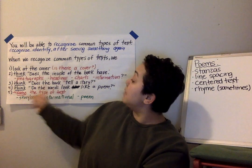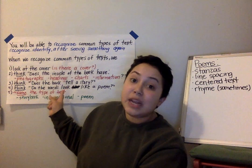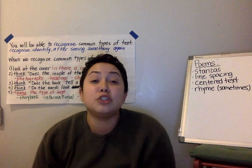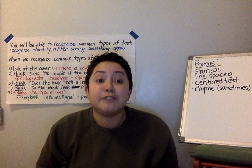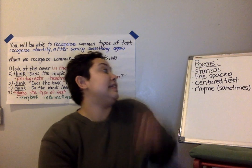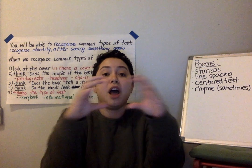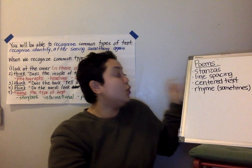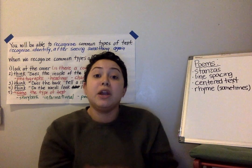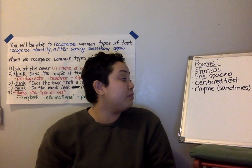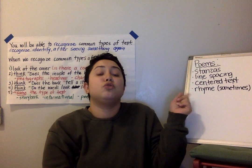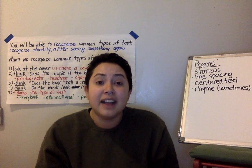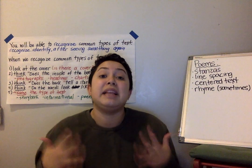Now we name the type of text. We're going to think whether or not it's a storybook, an informational text, or a poem. Poems are so special because they're written in a different type of way. Poems have stanzas — that's groups of text together, sentences. They have special line spacing. We might see the text that's all together in the middle of a page or to one side of a page, and a lot of the times poems rhyme. Do you remember what a rhyme is? That's when two words make the same ending sound.